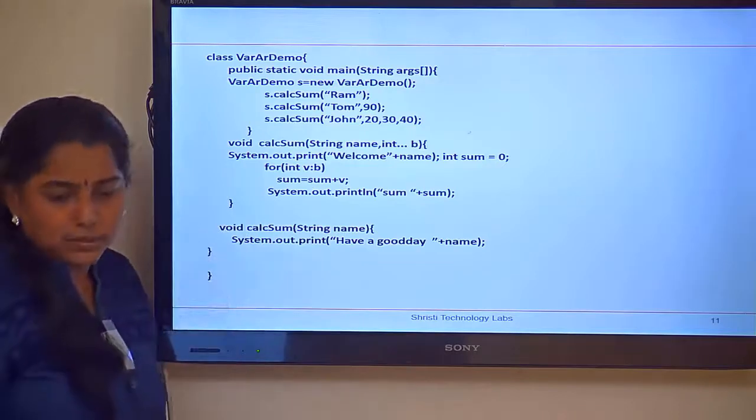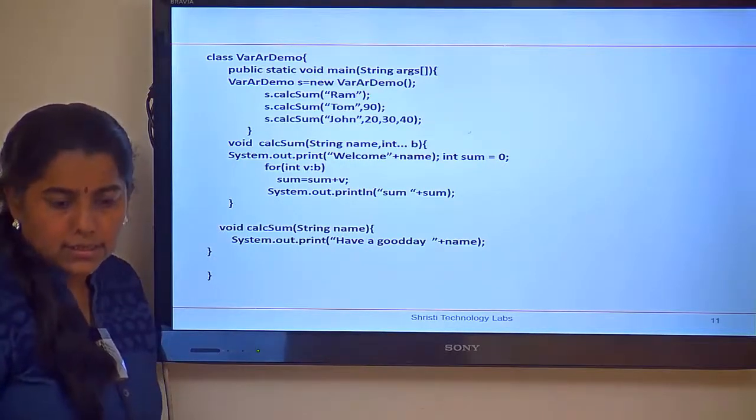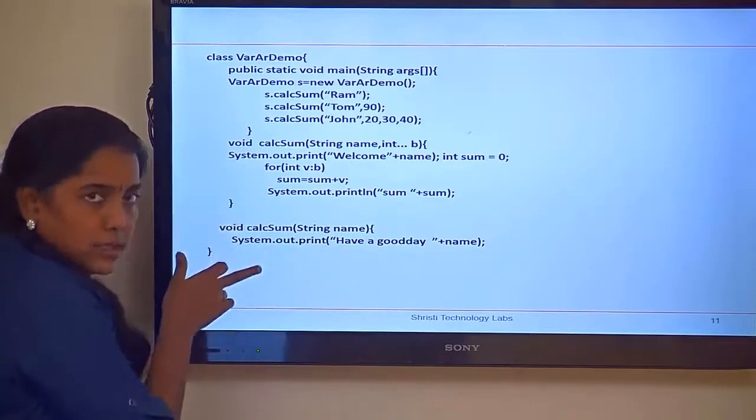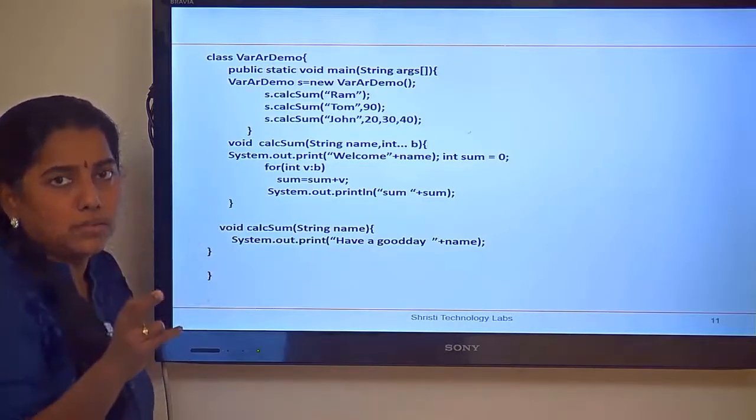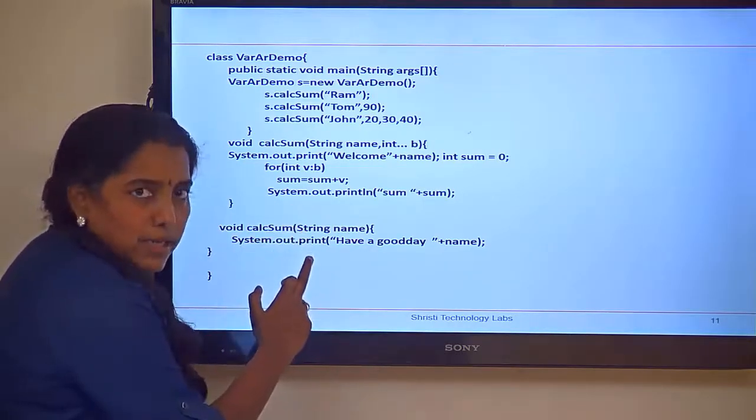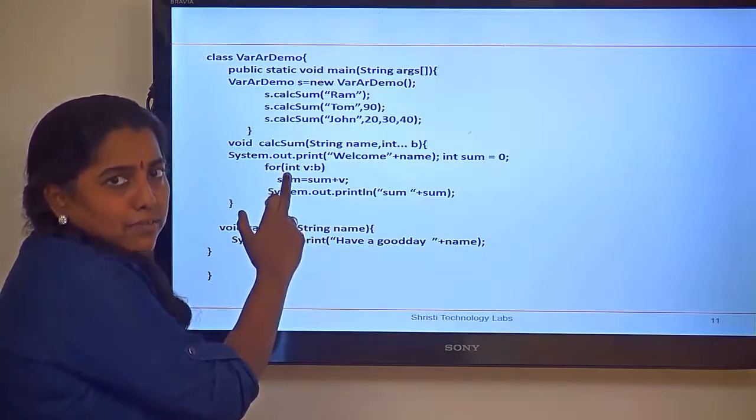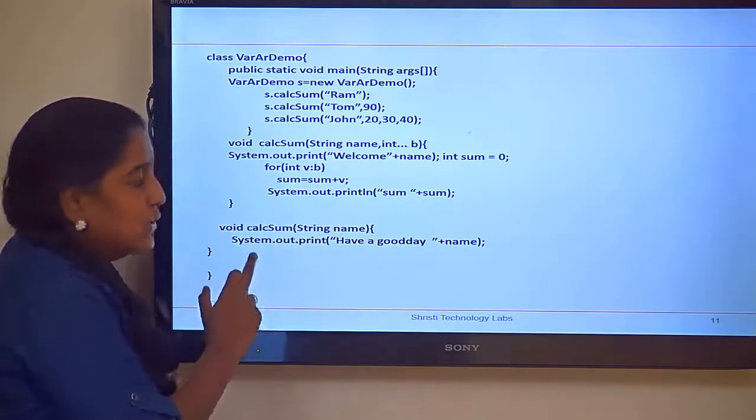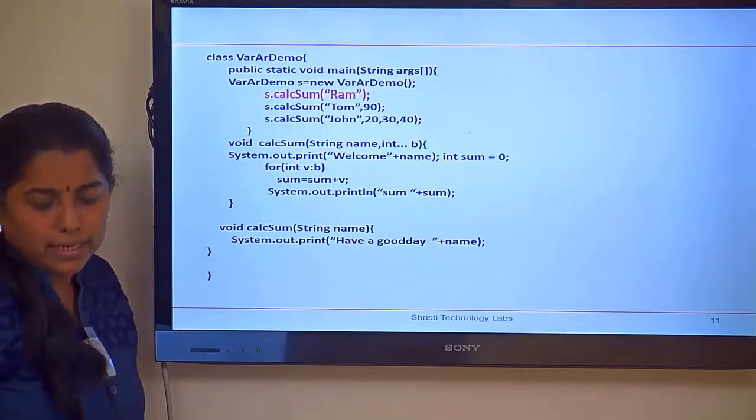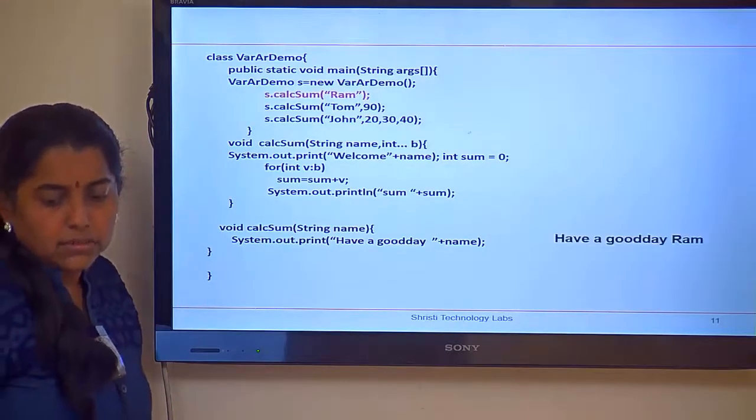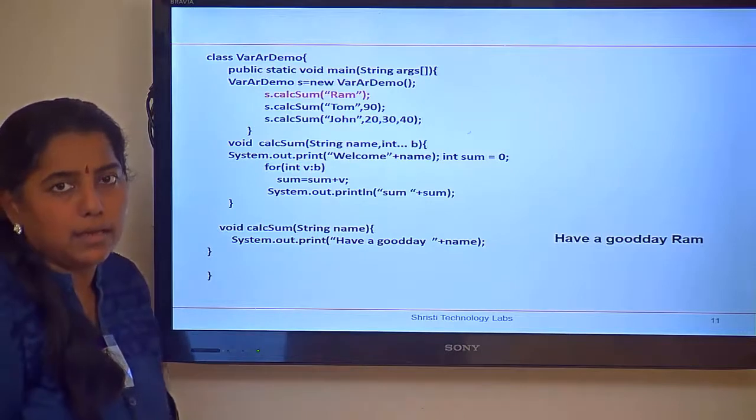What will be the output for the first one? s dot calc sum of ram. When I give like this. Will it go to this or to this method? Always old is gold. It will go to this method only. This is from 1.5 java. But this is a older version. So, what will be the output now? It will print have a good day ram. So, the output will be have a good day ram.